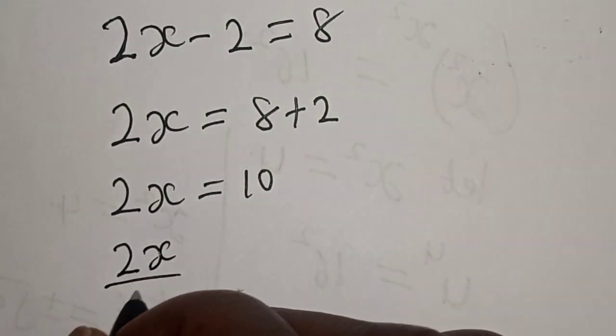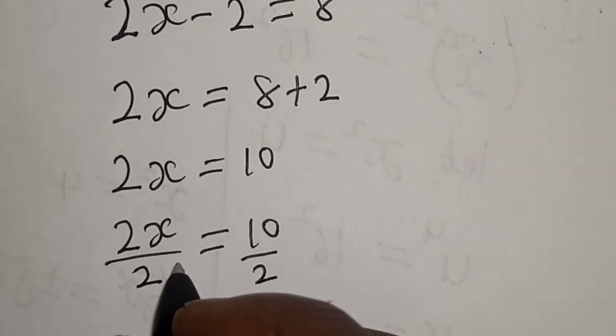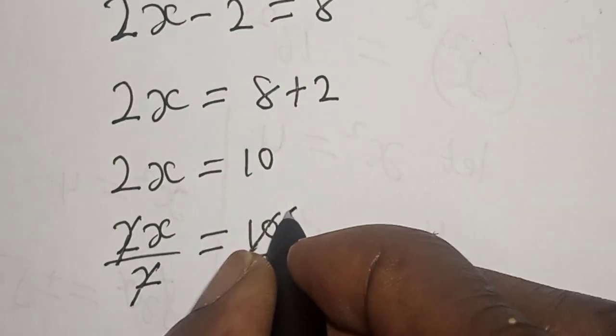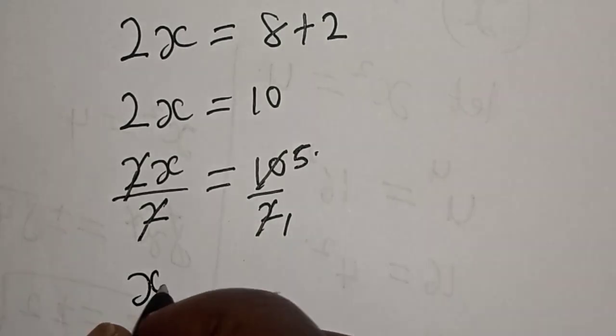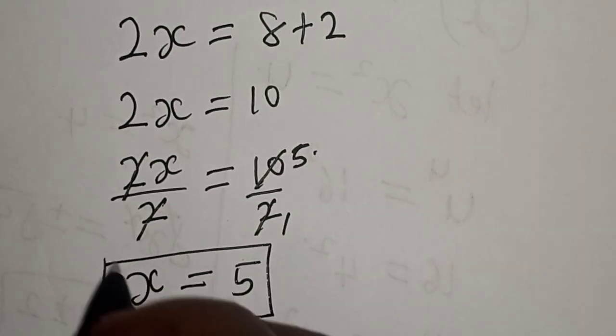2x is equal to 10. Let's divide both sides by 2. 2x divided by 2 is equal to 10 divided by 2, which gives us x equals 5.